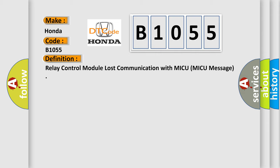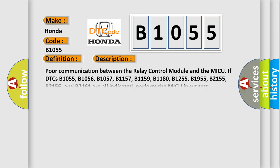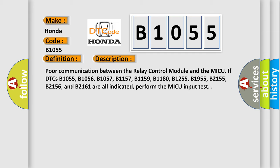Here is a short description of this DTC code: poor communication between the relay control module and the MICU. If DTCs B1055, B1056, B1057, B1157, B1159, B1180, B1255, B1955, B2155, B2156, and B2161 are all indicated, perform the MICU input test.